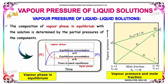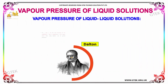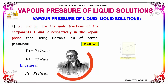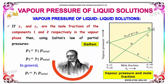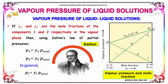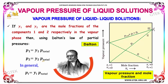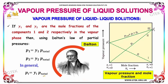The composition of the vapor phase in equilibrium with the solution is determined by the partial pressures of the components. If y1 and y2 are the mole fractions of components 1 and 2 in the vapor phase, then using Dalton's law of partial pressure: P1 = y1 × P_total and P2 = y2 × P_total. In general, Pi = yi × P_total.